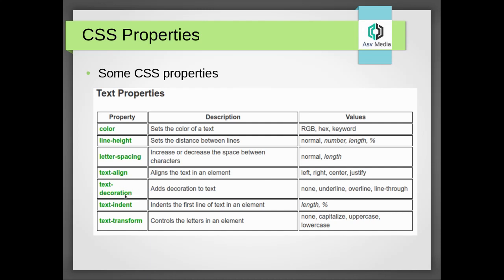Text-decoration we can use to give underline, overline, or line-through — just to add decoration to text. Text-indent: suppose in a paragraph you want some space like indents for the first line of a text element, just use text-indent. And suppose you want to make a heading all capitalized, just use text-transform. It will capitalize all your words and controls the letters in an element.